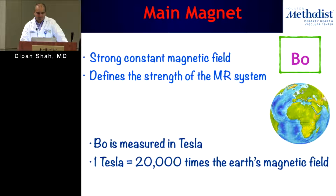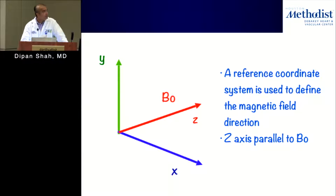What is a tesla — besides the car? A tesla is equivalent to 20,000 times the earth's magnetic field. Remember, the earth has a magnetic field and a gravitational field — don't mix the two up. One tesla equals 20,000 times the earth's magnetic field.